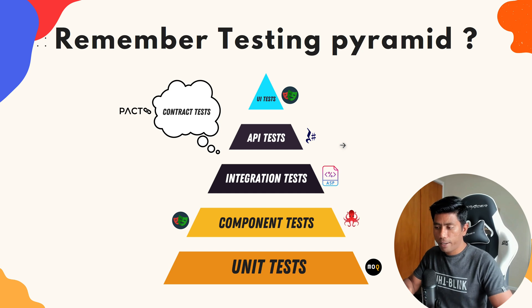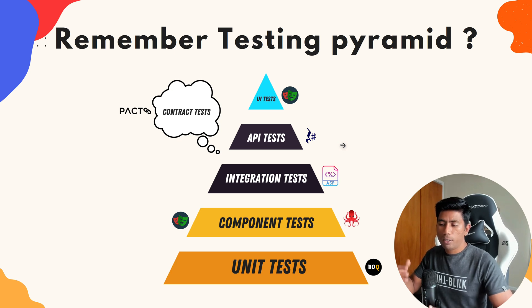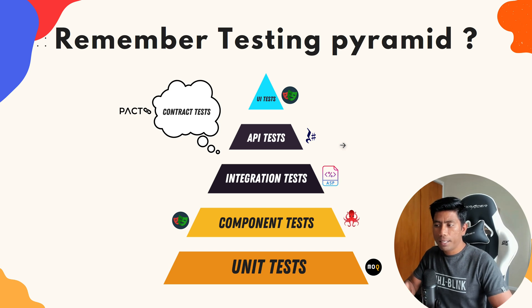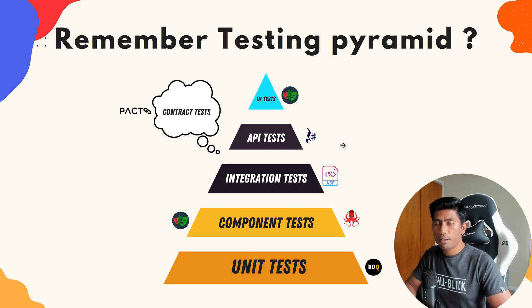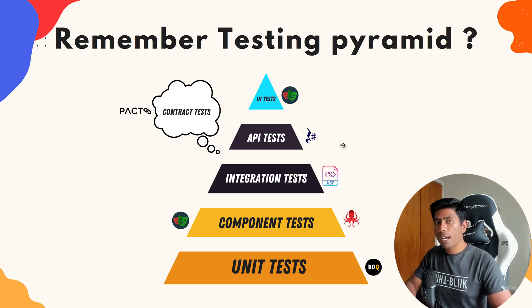You can see the testing pyramid which will help you understand where the tests are going to sit: unit testing, component testing, integration, API, and UI testing. Unit testing and component testing are not covered in this particular course, but integration, API, UI, and contract testing are the focus. A large amount of tests will be sitting especially in the integration testing layer - that's what we are going to be discussing from a testing perspective.